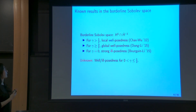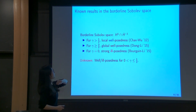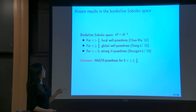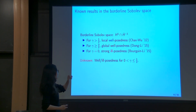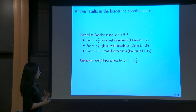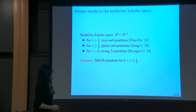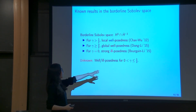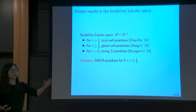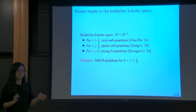Let me summarize the known results on this regularized model in the borderline space. When gamma is greater than 1/2, we have local well-posedness; when gamma is greater than or equal to 3/2, Dong and Li obtain global well-posedness. Interestingly, there is a gap between these two numbers, and whether the solution has global lifespan in the intermediate range is still an open problem. On the other hand, when gamma equals 0, which is the 2D Euler vorticity equation, Bourgain and Li established the ill-posedness result.